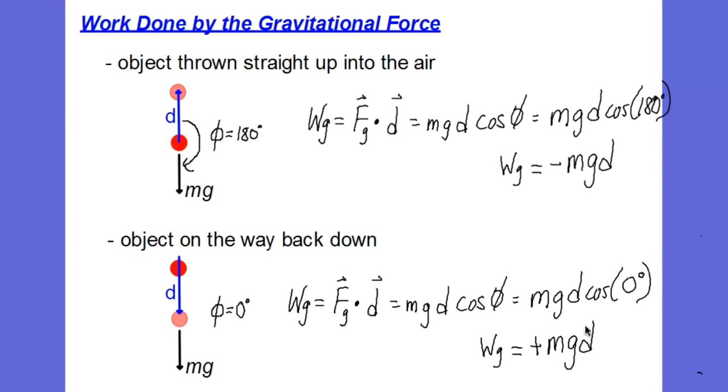And if we think about the plus and the minus sign here, it should make sense. On the way up, an object is slowed down by gravity. And so the work done is negative. In other words, it takes kinetic energy away from the object and the object slows down. As it falls back to Earth, the gravity helps to speed the object up and its kinetic energy increases and positive work is done on the object.